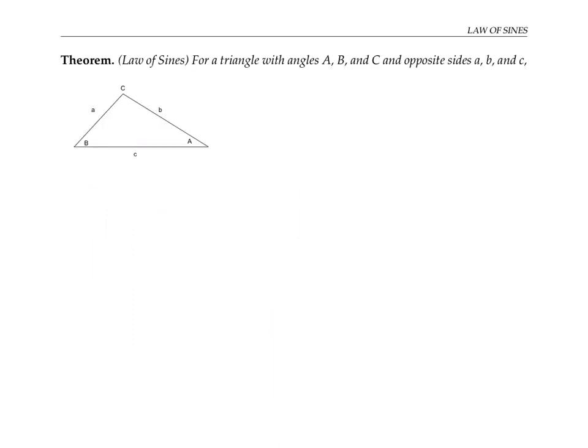The law of sines says that for a triangle with angles A, B, and C opposite to sides lowercase a, b, and c respectively, the sine of angle A divided by the length of side a is equal to the sine of B over b, which is also equal to the sine of C over c. Notice that we're taking the sine of the three angles and dividing by the three opposite side lengths.